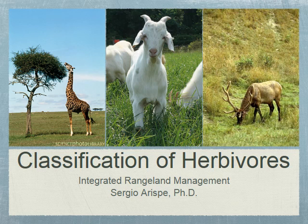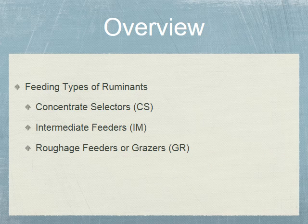In this lecture I'm going to discuss the classification of herbivores. The big picture is to focus on your specific rangeland scenario and how you can use herbivores as a tool to manage rangelands. We're going to discuss feeding types of ruminants — the three different feeding types are concentrate selectors, intermediate feeders, and the last group, the roughage feeders or grazers.